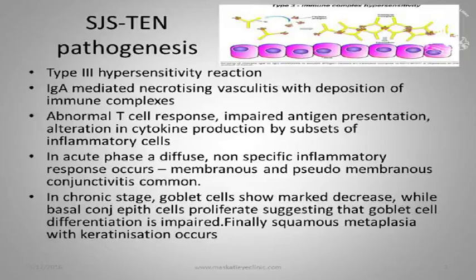In the chronic stage of SJS, goblet cells show a marked decrease while basal conjunctival epithelial cells proliferate. Normal conjunctiva has epithelium and goblet cells in equal ratio, but goblet cells decrease and regular epithelial cells proliferate, leading to squamous metaplasia. You get conjunctivalization of the cornea and that typical dry, lustreless look at the end.